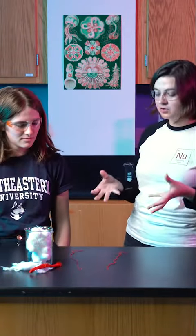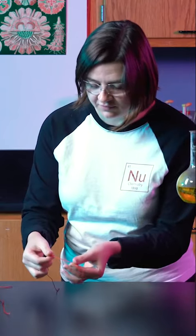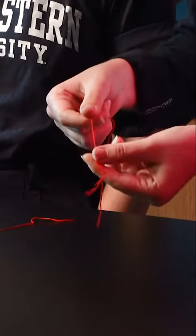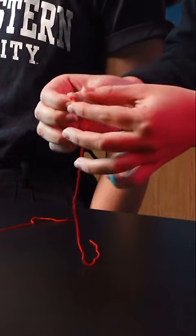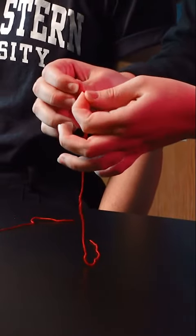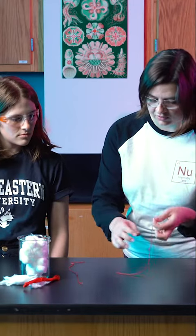So what makes yarn so tough? Yarn is made up of a bunch of different strands of fibers that are twisted together to give it strength. So if we unravel that yarn, it's really easy, right?